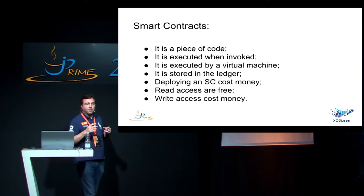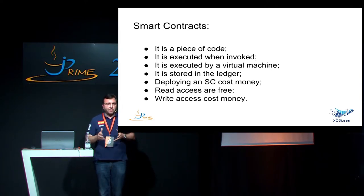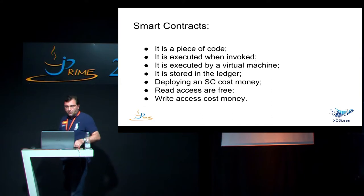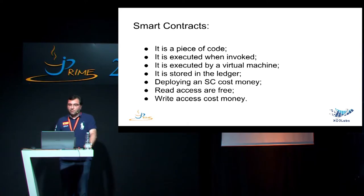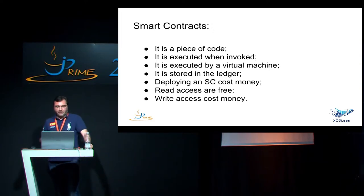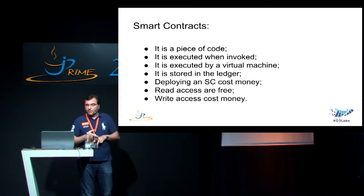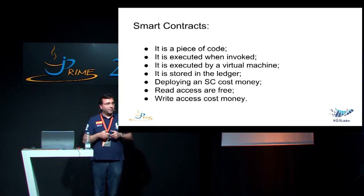It is executed by a virtual machine - not a Java virtual machine, not a VMware virtual machine. In the Ethereum world they have the Ethereum Virtual Machine which is able to interpret Ethereum bytecode. The smart contract itself is stored in the ledger. When I said before that the ledger could hold digital assets, well a smart contract is a digital asset as well. When you deploy a smart contract it costs money because it takes space and processing power, and you pay using the cryptocurrency attached to that blockchain.